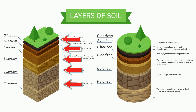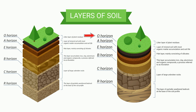The horizon layers are O, A, E, B, C, R. Let's take a look at what each layer is made up of.